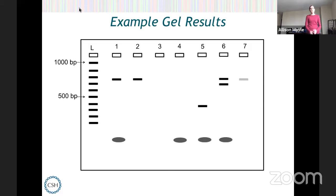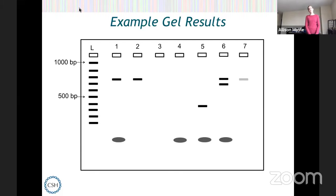Lane one looks great — this one I would send for sequencing. In lane two, we see the barcode we expect. We don't see the primers at the bottom, but I wouldn't be too worried if I saw this in one of my classes, because maybe the reaction just used up all the primers and there wasn't much primer left in the tube to visualize on the gel. Now, lanes three and four — take a look at those and think about what went wrong. These don't look like lanes one and two — we don't see that barcode band where we expect it at 750 base pairs.